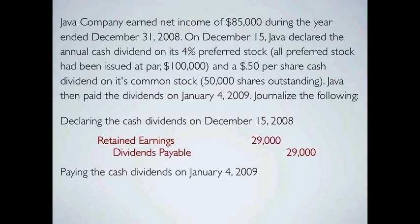The amount is $29,000 — but how did we get that? They tell us we have $100,000 in preferred stock outstanding, and we pay a dividend of 4%, so 4% of $100,000 is $4,000. They also tell us we have 50,000 shares of common stock outstanding and we're going to pay $0.50 per share, which is $25,000. So $25,000 to the common stockholders plus $4,000 to the preferred stockholders equals $29,000 in total dividends.